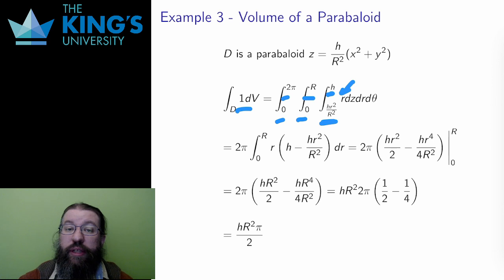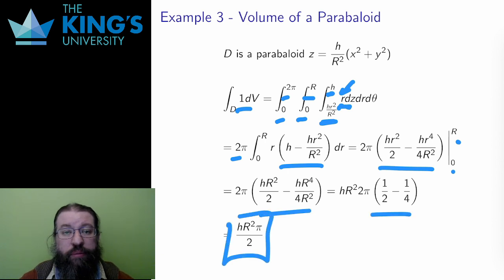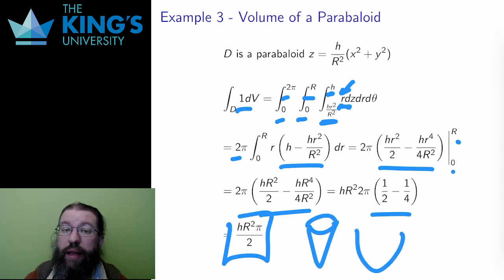I integrate the function 1 for the volume and include r for the Jacobian of cylindrical coordinates. Then the theta integral is again separable and gives 2π. I have to do the z integral first this time, which is shown here. And then I do the r integral, evaluating the bounds, and the result is 1 half h R squared π. This is a bit larger than the 1 third of the same for the cone, which makes sense since the quadratic shape of the paraboloid extends out earlier and takes up more volume than that of the cone.